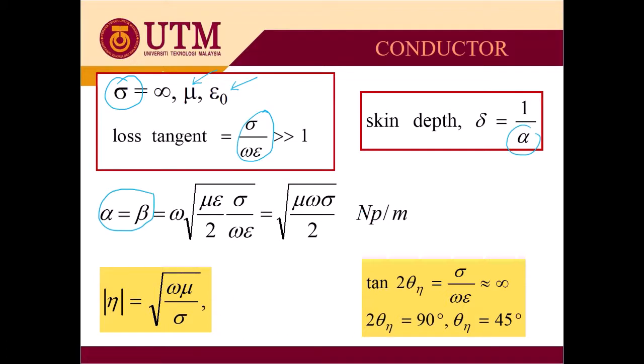And the value of the intrinsic impedance equal to square root omega mu divided by sigma. And the tangent 2 theta_n equal to sigma divided by omega epsilon approaching infinity. When the tangent 2 theta_n approaching infinity, that means the 2 theta_n equal to 90 degrees or theta_n equal to 45 degrees. This is characteristic for conductors.